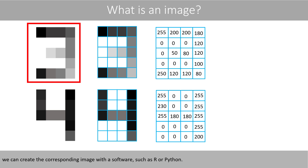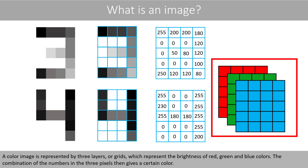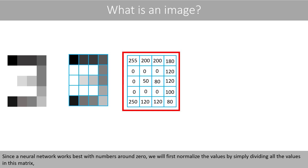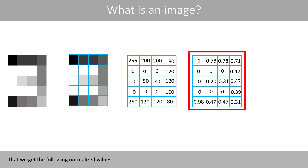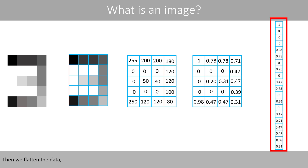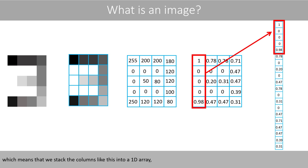If we have a grid with numbers like this, we can create the corresponding image with software such as R or Python. A color image is represented by three layers, or grids, which represent the brightness of red, green, and blue colors. The combination of the numbers in the three pixels then gives a certain color. Since a neural network works best with numbers around 0, we will first normalize the values by simply dividing all the values in this matrix by 255, which is the largest value, so that we get the following normalized values. Then we flatten the data, which means that we stack the columns into a one-dimensional array.